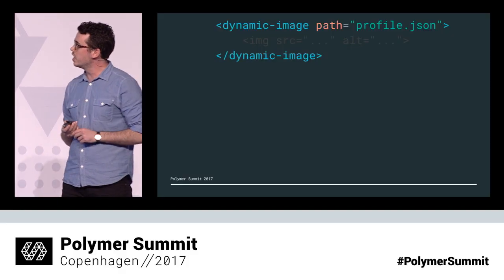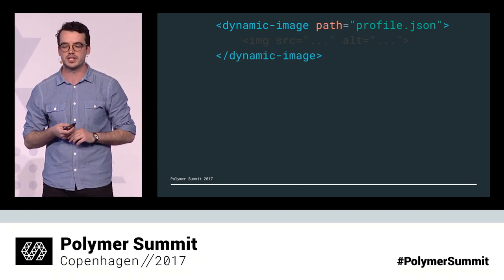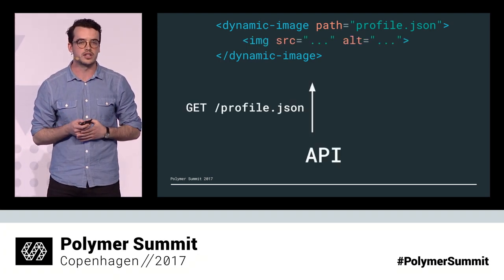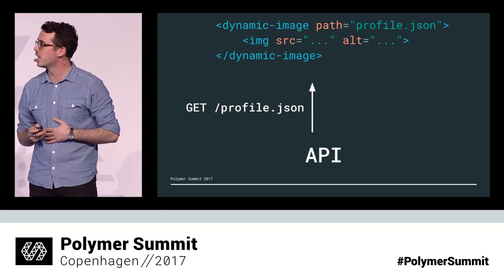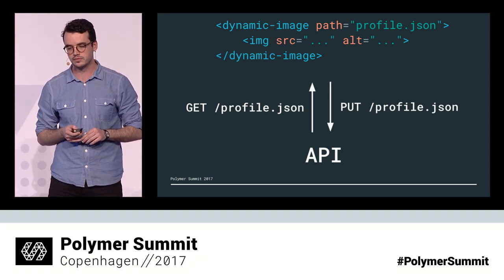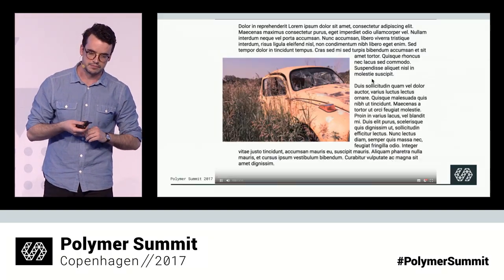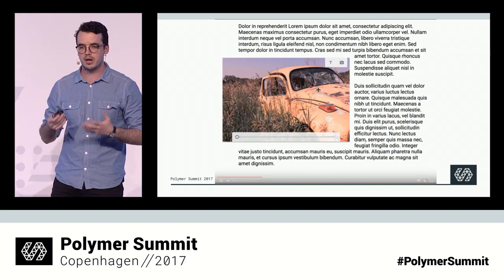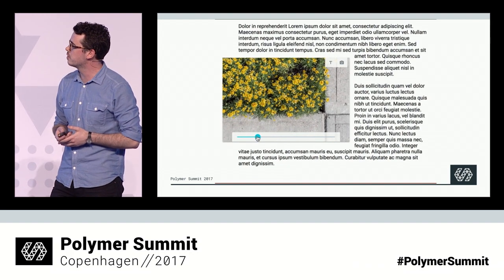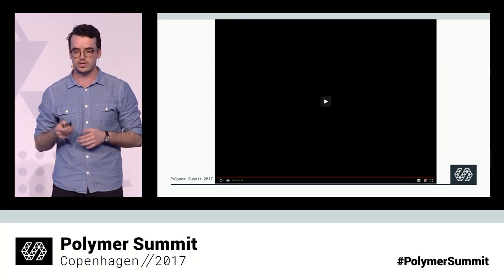So what would this look like? Here I've got a dynamic image custom element with a path property that maps to some URL. Essentially it's just pointing to some data. At some point I want it to fetch from an API and render out that content — so in this scenario, that means an image tag. Later on, I want it to save back to that same endpoint via a PUT request. But what about the editing experience? We want the editor to be able to come in, interact with that image in an isolated environment, maybe upload a new one, manipulate it in some way, then be able to exit — all in the context of that one image and see what the user is going to see.